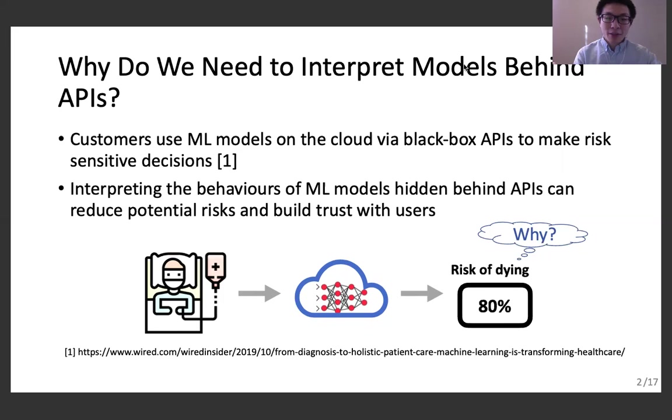However, since the models are protected as top commercial secrets, customers cannot access the internal information of the remote models, which makes it very hard for customers to get the reasons for the model's predictions. In summary, interpreting machine learning models hidden behind APIs is important because they can reduce potential risks and build trust with users.